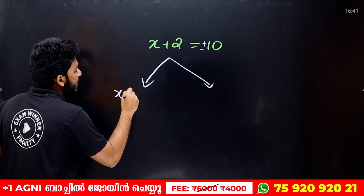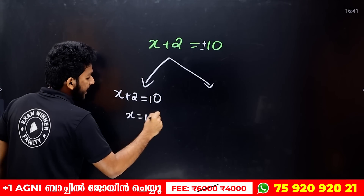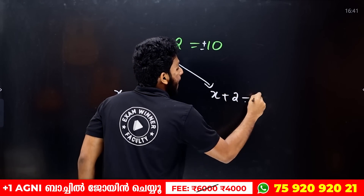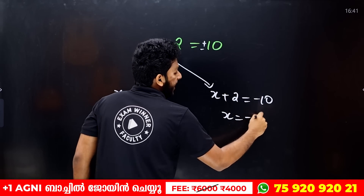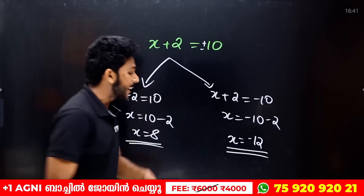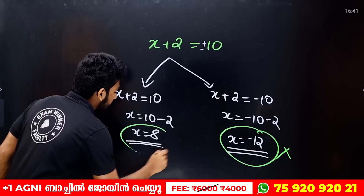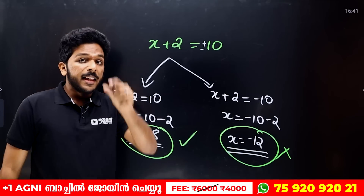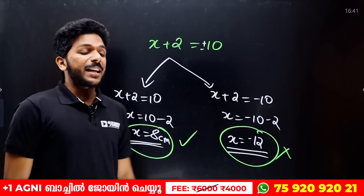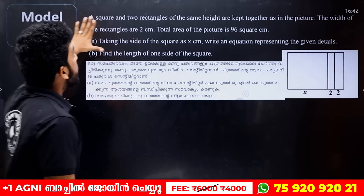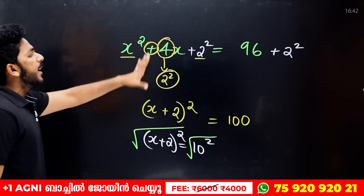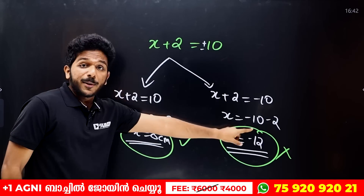x plus 2 is equal to 10, that means x is equal to 10 minus 2, so x is equal to 8. Then we take the square root. Now we have minus 10: x plus 2 is equal to minus 10, that means x is equal to minus 10 minus 2, which gives x equal to minus 12. We can say that the negative value is rejected. The correct answer is x is equal to 8. So the side length is 8 centimeters. Because the number of centimeters must be positive, we get the final answer. If you don't have a complete square, you can solve for x; the answer to the minus solution is minus 12, which is rejected.